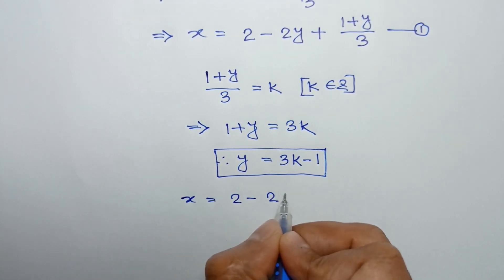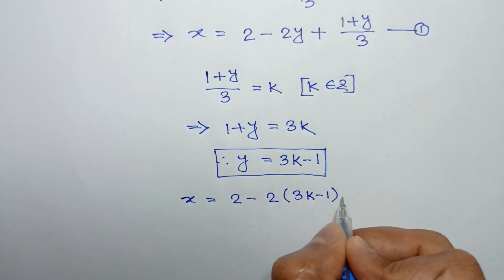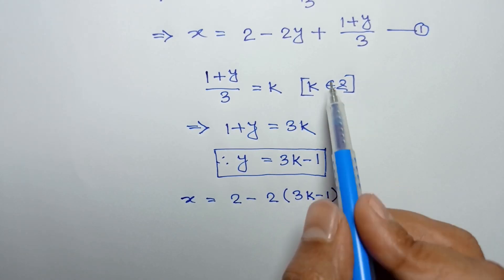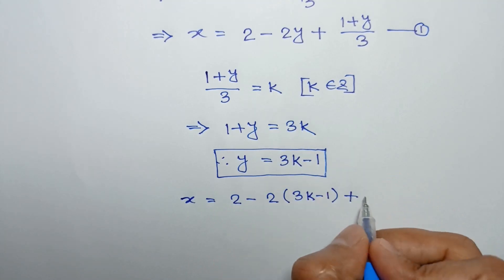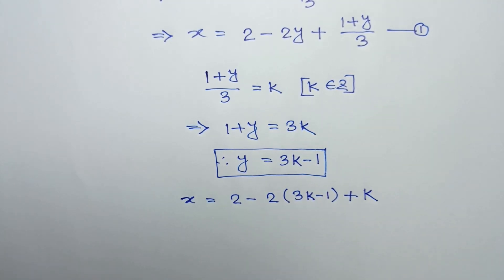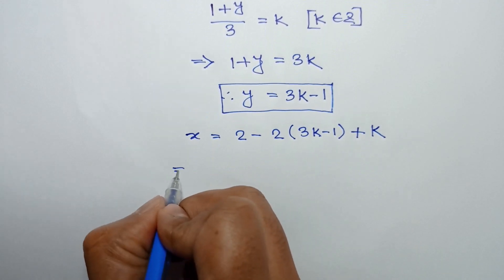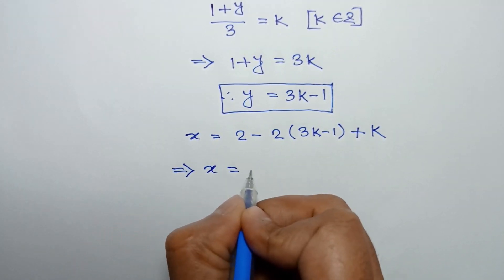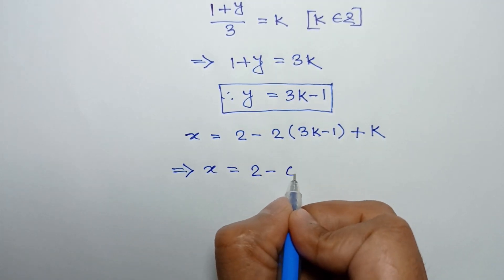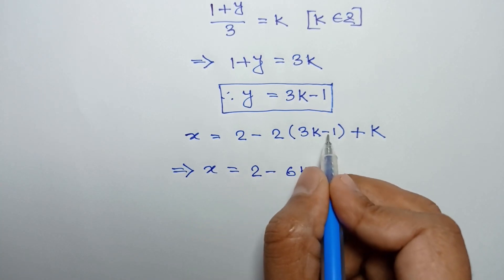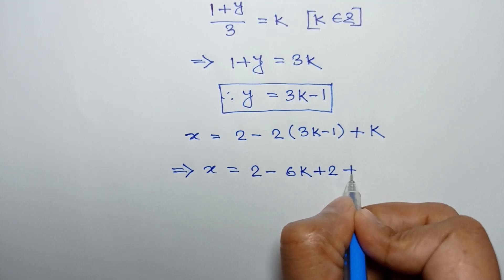Substituting the value of y into equation number 1, we can write x = 2 - 2(3k - 1) + k. Expanding: -2 times 3k is -6k, and -2 times -1 is +2, plus k.